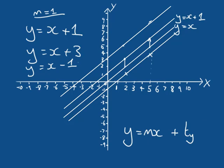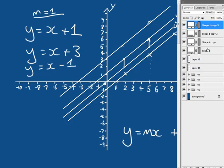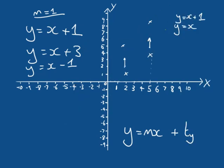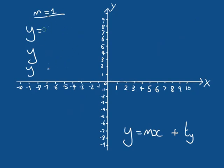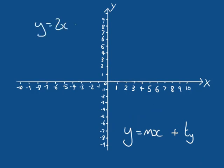We can demonstrate this with a line other than Y equals X. Let's use Y equals 2X with M equals 2. If X equals 1, Y equals 2; if X equals 2, Y equals 4; if X equals 4, Y equals 8. If we wanted to translate this line down by two units, TY needs to be minus 2, so our line should be Y equals 2X minus 2.